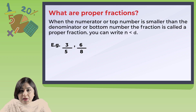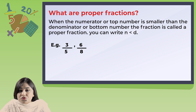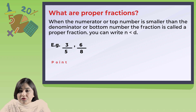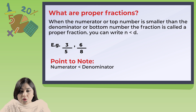Now I am going to explain what are proper fractions. When the numerator — the top number — is smaller than the denominator — the bottom number — the fraction is called a proper fraction. For example, 3 is smaller than 5, and 6 is smaller than 8, so these are proper fractions. You can write it as: n is less than d, meaning numerator is less than denominator.